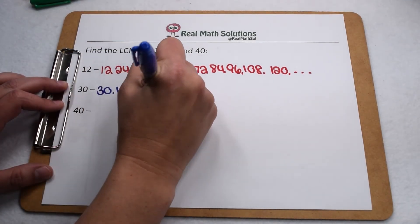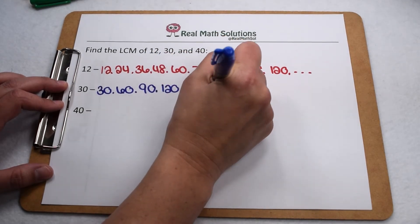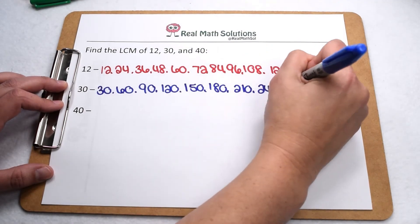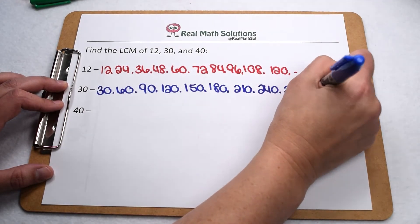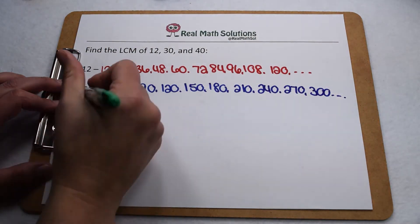Listing out the first 10 multiples of 30, we have 30, 60, 90, 120, 150, 180, 210, 240, 270, and 300 will be our 10th multiple.